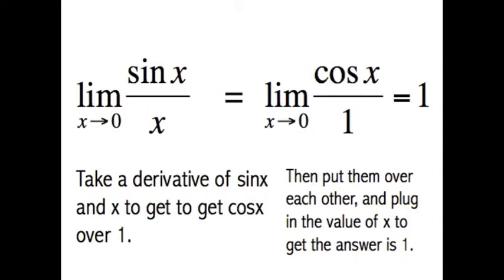Take the derivative of sin X and X, and put them over each other: cos of X over 1. Once you've gotten the form, plug in the value of X, and you'll get the answer to be 1.